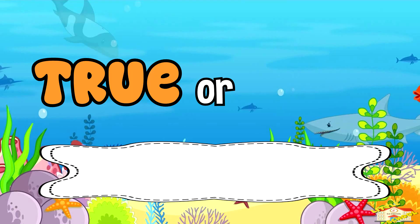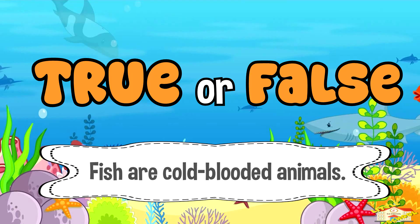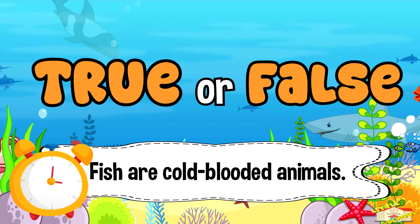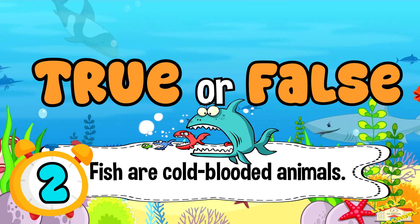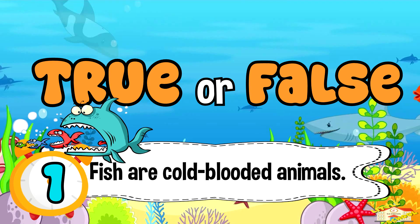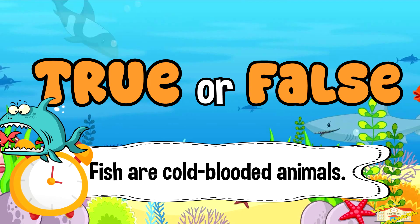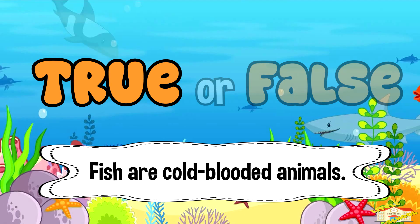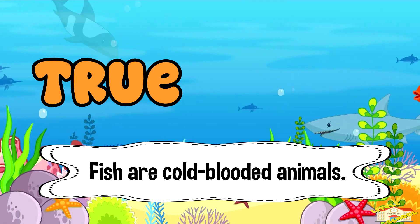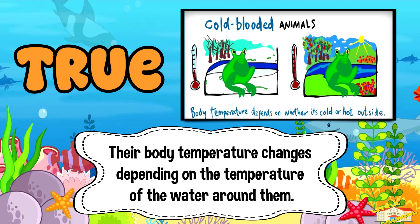True or false: fish are cold-blooded animals? Five, four, three, two, one. And the answer is true. Fish are cold-blooded, which means their body temperature changes depending on the temperature of the water around them.